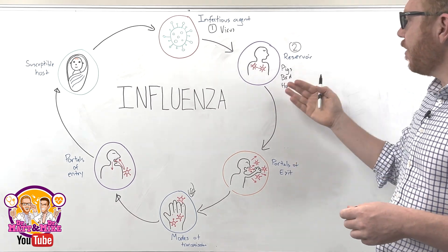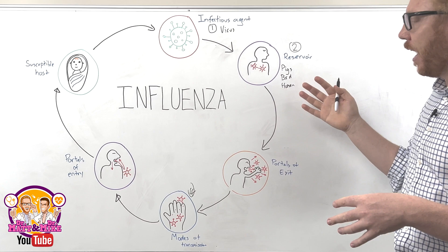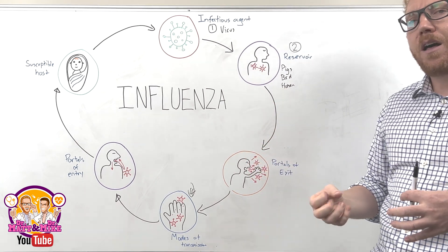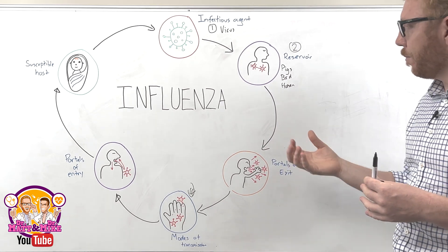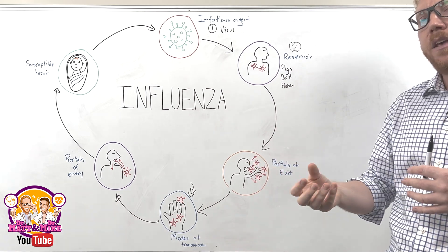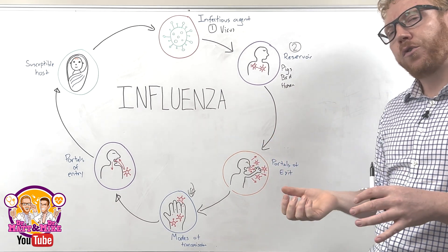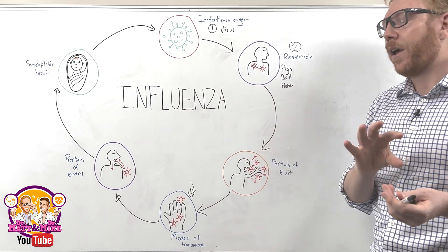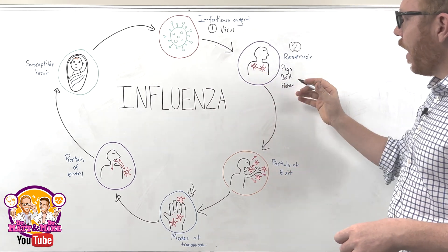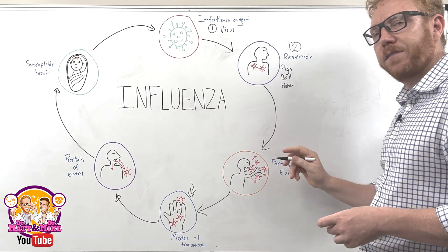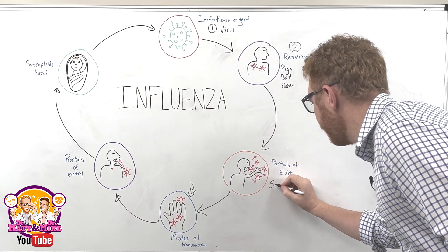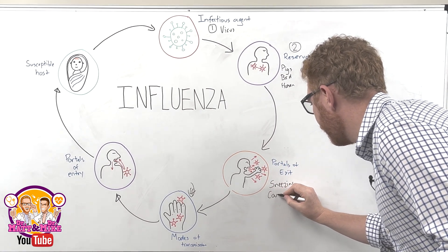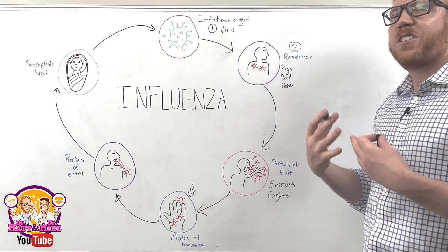Next is the portal of exit — how does the infectious agent exit the reservoir? This depends on what the reservoir is. It could be through the water supply or contaminating food, but in terms of living hosts it could be blood, certain secretions like feces or urine, or respiratory excretions like droplets or aerosol. For influenza, the portal of exit would be sneezing, coughing, or aerosol.